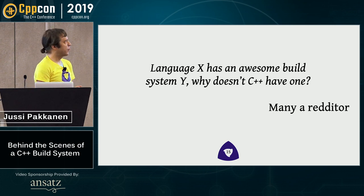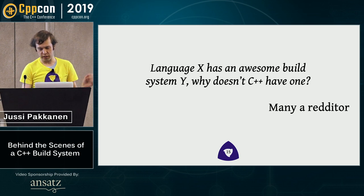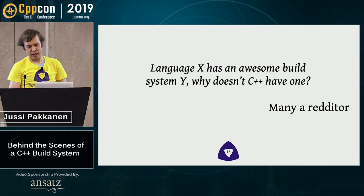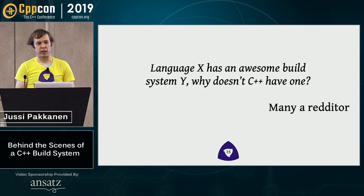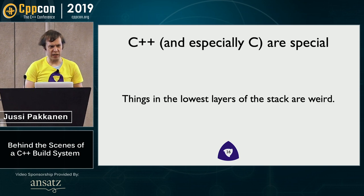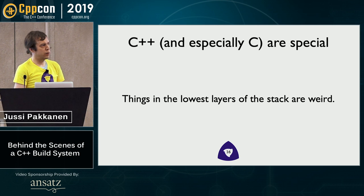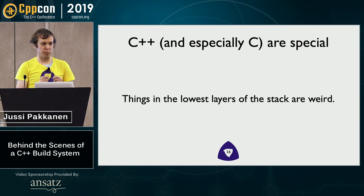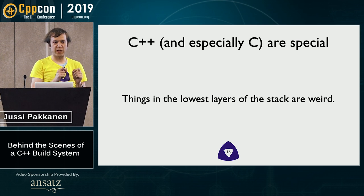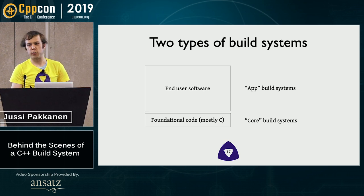Let's take a different story. You've probably seen on Reddit things like 'language X has this feature, why don't we have that?' It could be said that C++ has a little legacy and there are lots of things we can't just adopt. But there's something a bit deeper than that. C++ and especially C are very special because they're used to implement the very lowest levels of all stacks. And if you have a build system where you want to support that, you need to support all the special things that happen when you go really, really deep. Build systems are actually divided into two categories.